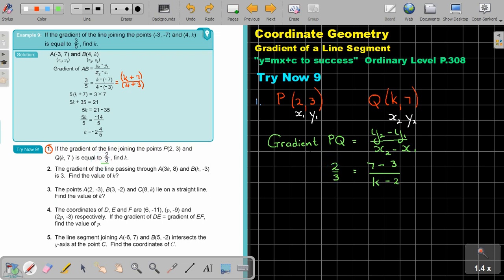And then I just use algebra to solve it. So it's 2 over 3 equals 7 minus 3 is 4 over k minus 2. And again, put brackets to make it 1 term equals 1 term. Because then you can cross multiply.